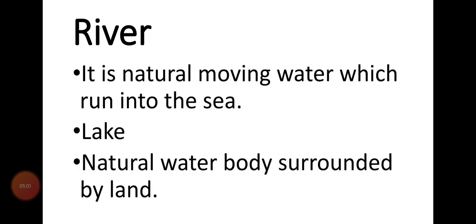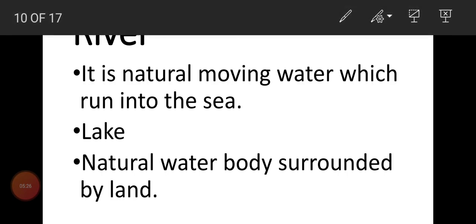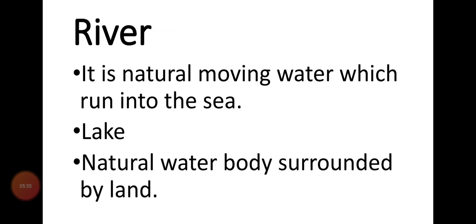Can you differentiate between a river and a lake? A river is a natural moving water body which runs into the sea — it is a stream of water that flows into the sea. A lake is a natural water body surrounded by land. The water of a lake is not moving, while the water of a river is moving. Rivers are formed when ice and snow melt and flow down from the mountain towards the lowlands of the valley and plains.